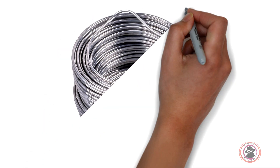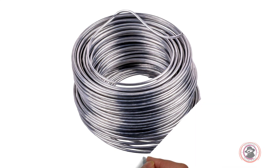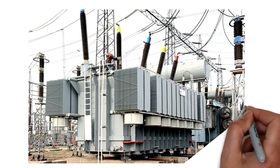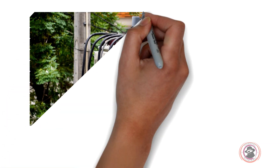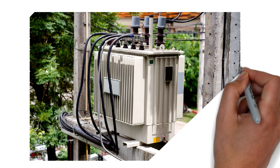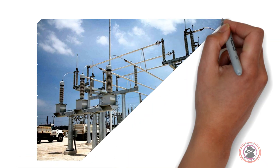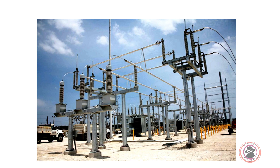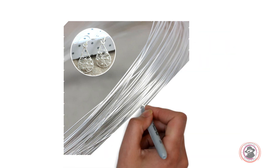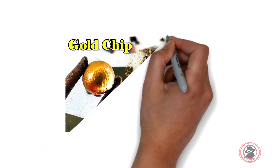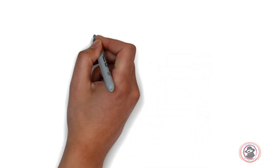Aluminum is also a good conductor. The second conductor is gold — gold is a very good conductor. Iron metals are also conductors. Copper and aluminum are the best conductors.